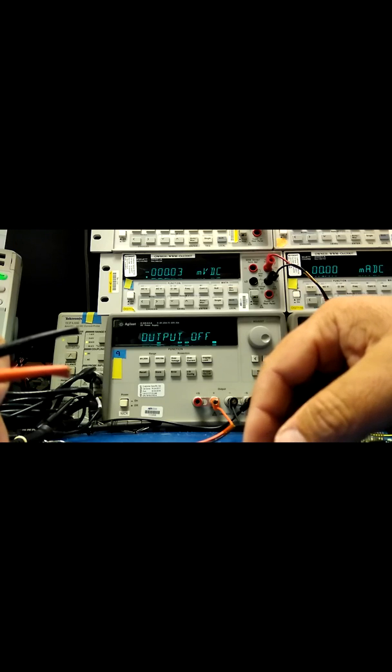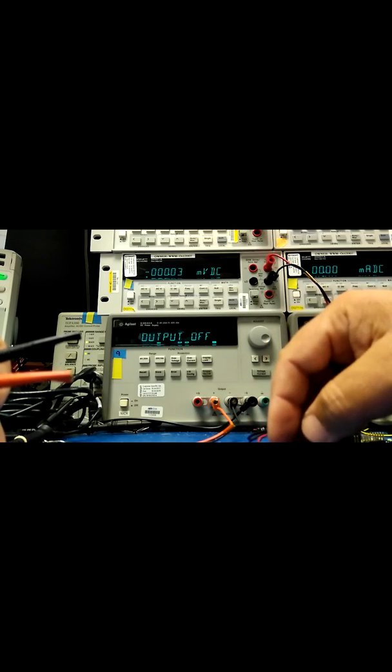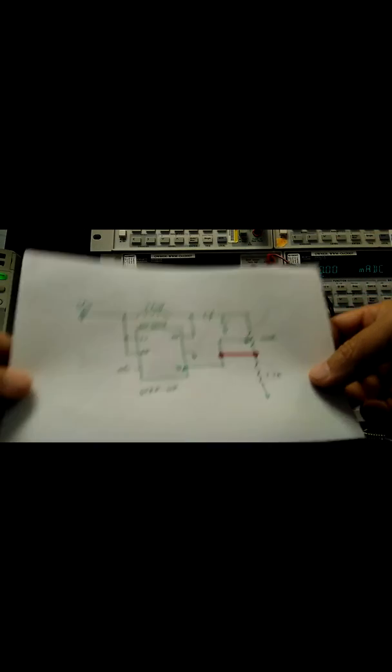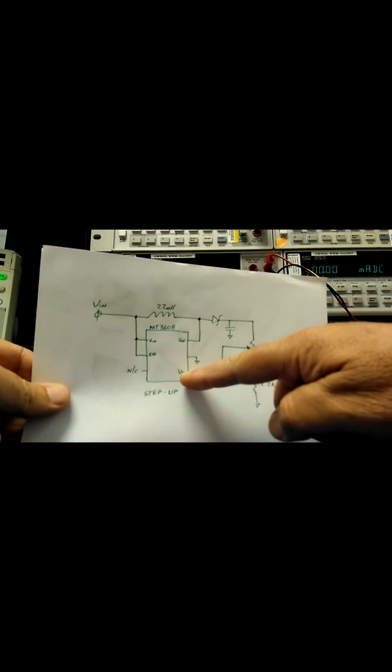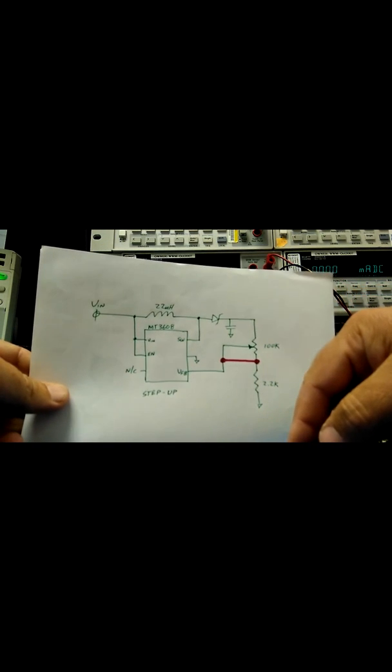But if you're up around seven volts and above on your input and you adjust the pot the wrong way, it basically zaps the feedback pin here. The reference is 0.6 volts.